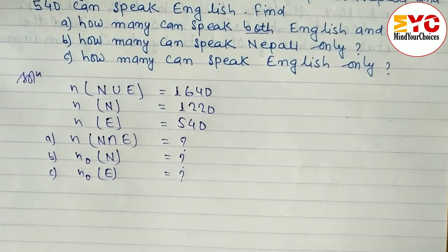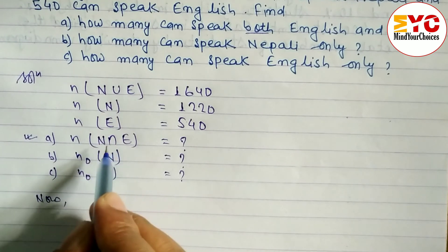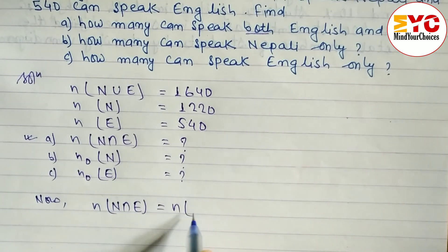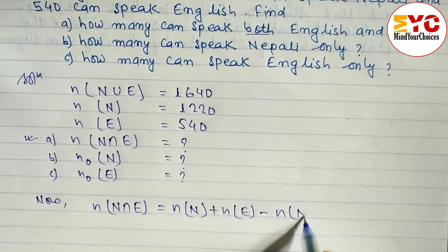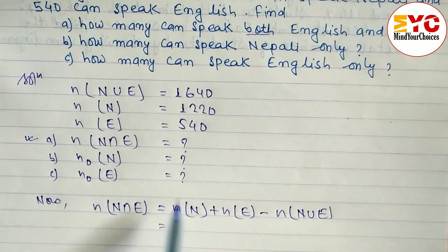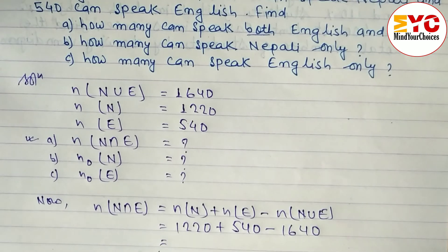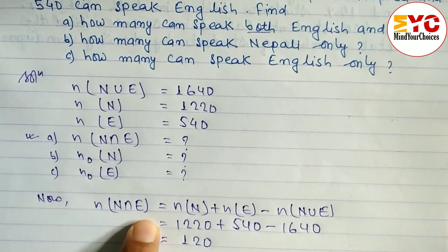Using the formula: N(N∩E) = N(N) + N(E) − N(N∪E). Substituting: 1220 + 540 − 1640 = 120. So the number of people who speak both Nepali and English is 120. If you don't know this formula, you can visit my formula playlist.